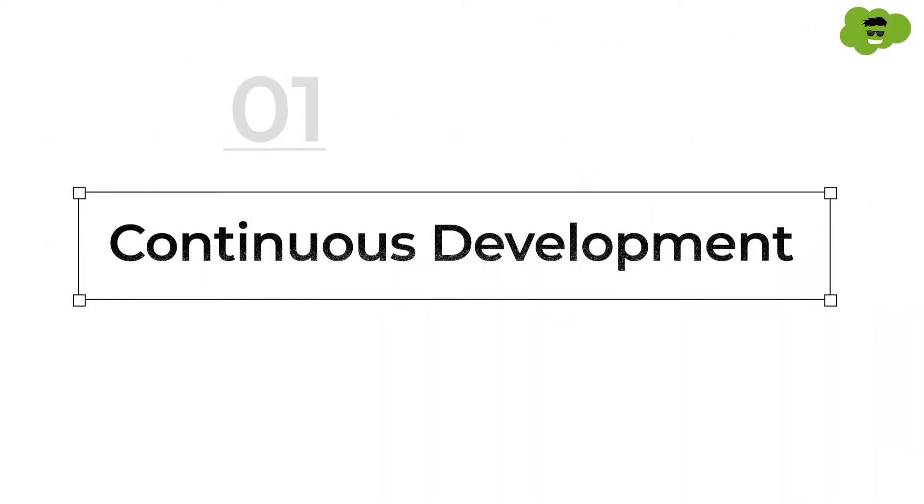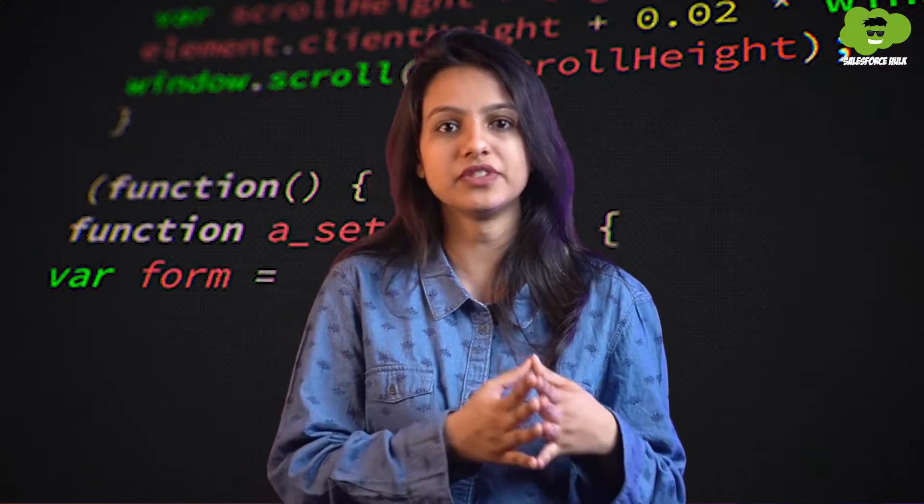Let's take a closer look at the seven C's of DevOps. The first C of the DevOps life cycle is continuous development. This helps to determine the vision of the software development process. It is a continuous process in which developers are required to write code whenever modifications are needed to match the project's requirements.